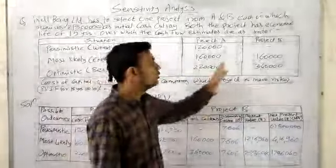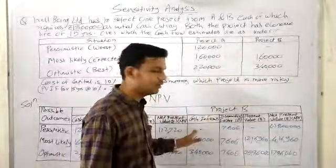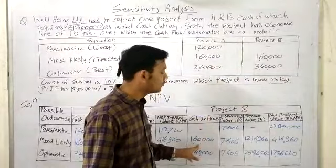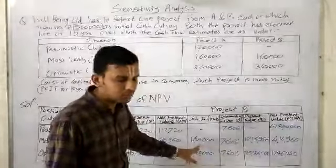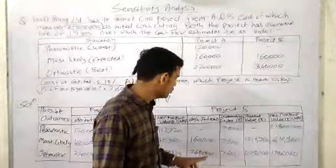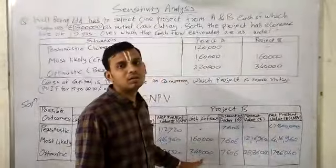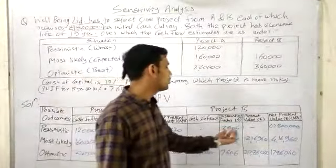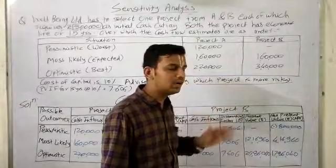Cash flow for pessimistic approach is zero, nil. We have not taken it. For most likely or expected situation, we have 1,60,000. For optimistic, it is 3,40,000. Present value factor already given in cumulative nature, we have taken the same.